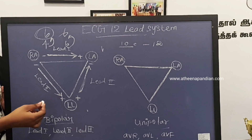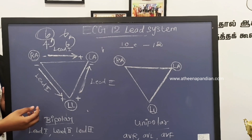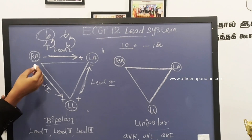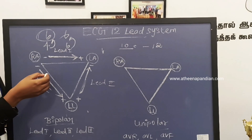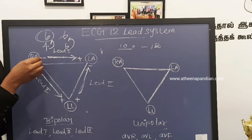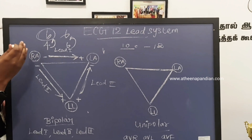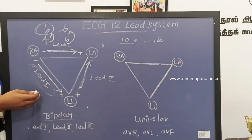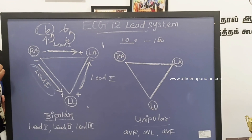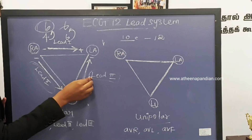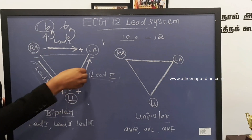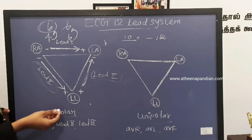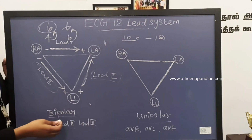Lead 3 measurement is taken between the left leg and the left arm. Each lead waveform views a particular portion of the heart. For example, Lead 1 allows us to see the left side of the heart. Lead 2 allows us to see the inferior left of the heart. And Lead 3 allows us to see the inferior right side of the heart. These are the bipolar electrodes.